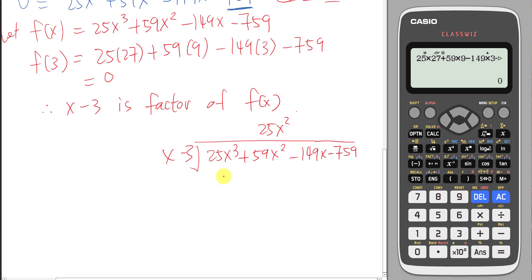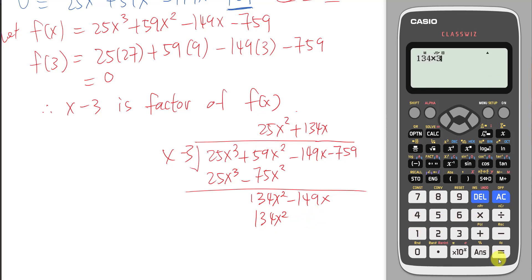So here is I will do 25x squared. So 25x cubed minus 75x squared. So here I have the minus 59 plus 75. I will get 134x squared minus 149x. So here I will say 134x. So 134x squared. 134 times 3. I will get minus 402x.